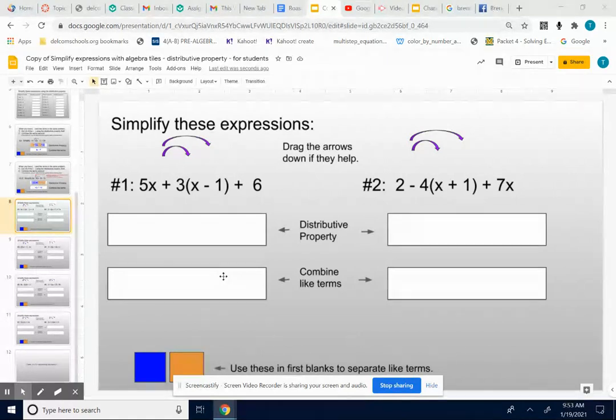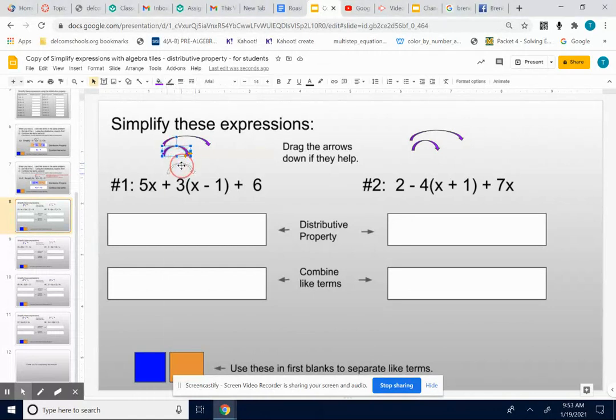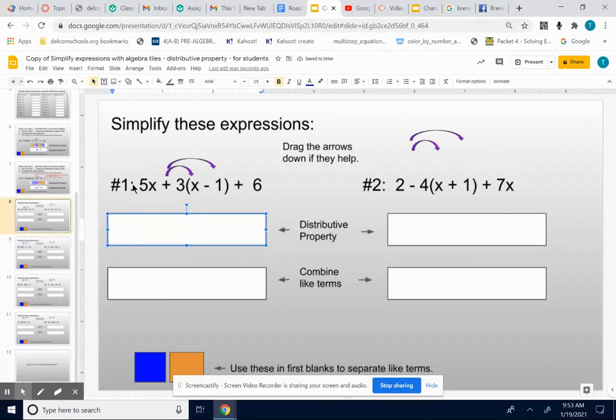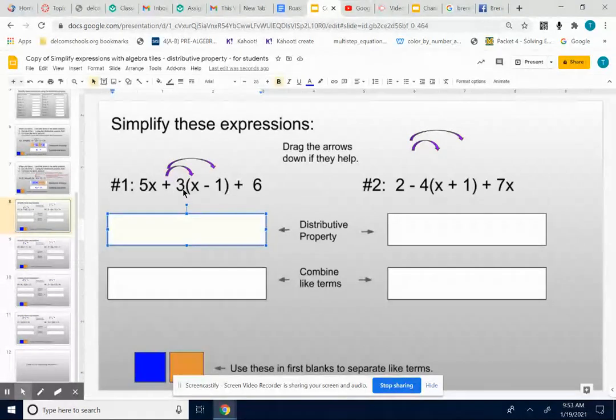Okay, so number one: 5x plus 3 times x minus 1 plus 6. To simplify this, we first want to use the distributive property. It helps me to visualize the distributive property with these arrows. We're going to think about taking that number outside of your parentheses and multiplying it to both parts.